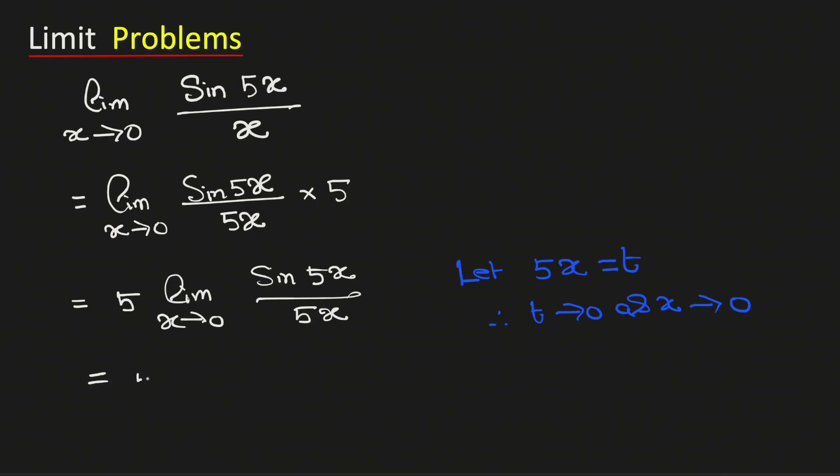So this limit will be equal to 5 times the limit as t tends to 0 of sin t divided by t. We know that this limit is equal to 1. So it is 5 times 1 which equals 5.